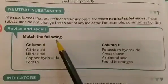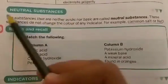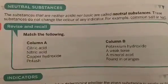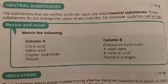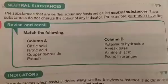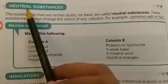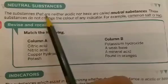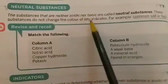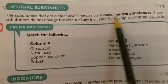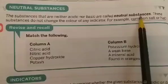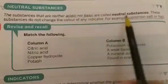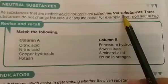Let's talk about the second part of this chapter. We have to study now about neutral substances. We have studied about acidic substances and basic substances. Now it's time for studying neutral substances. The substances that are neither acidic nor basic are called neutral substances.